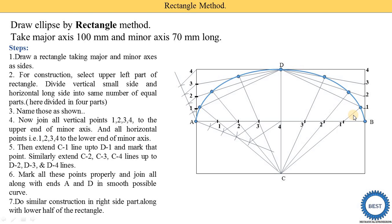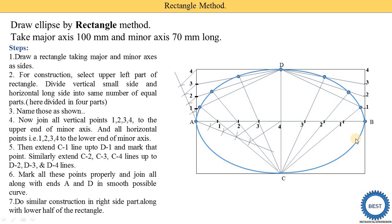Similarly, for the lower half of the rectangle, divide the vertical part into four equal parts and the horizontal part into four equal parts. Connect the vertical points with point C and the horizontal points with D. Extend D-to-three, D-to-two, and so on in the same way to obtain the required points. Draw smooth curves through all the points to achieve the complete, perfect ellipse.